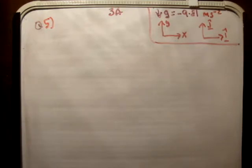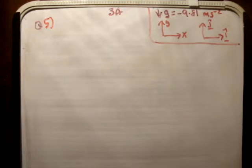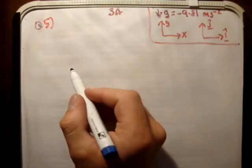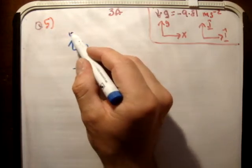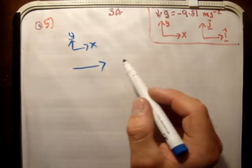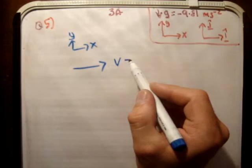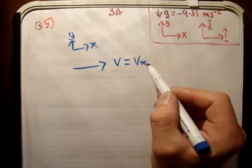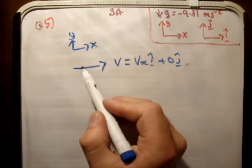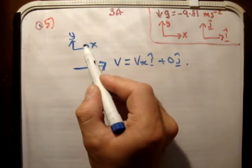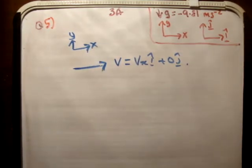So, the first thing to note here is our usual, the gravity, the XY plane and the IJ unit vectors. The next thing to notice is that this particle is projected horizontally, like so. We'll say there's the XY axis or XY plane. So this means that V is equal to V sub X I hat plus 0 J hat. There is no J component. This is parallel to the X axis, therefore there is no component in the Y axis.